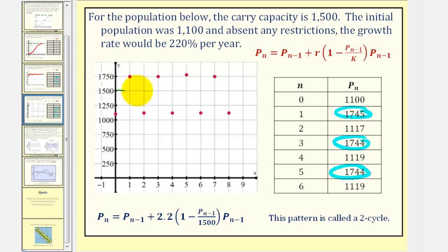Here's the carrying capacity. A graph would look like this. And this is called a two-cycle. Again, this is because the populations are bouncing back and forth between the same higher level population and the same lower level population.